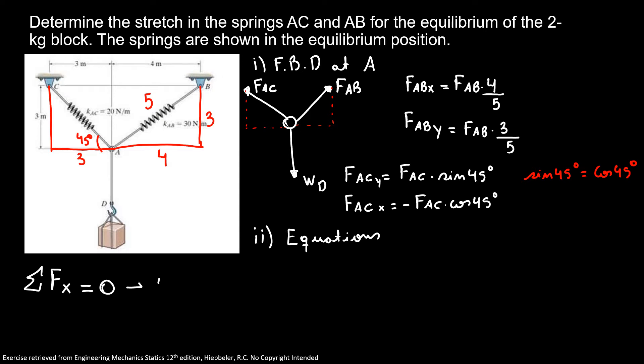So I have FABx in vector form plus my vector form of FACx equals zero. So I have FAB times 4 over 5 minus FAC times cosine of 45 equals zero. So here I have that FAB times 4 over 5 is the same as FAC times cosine of 45 degrees.